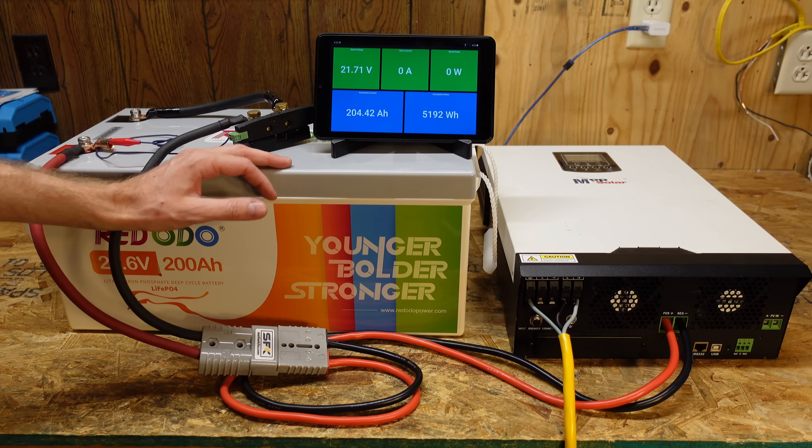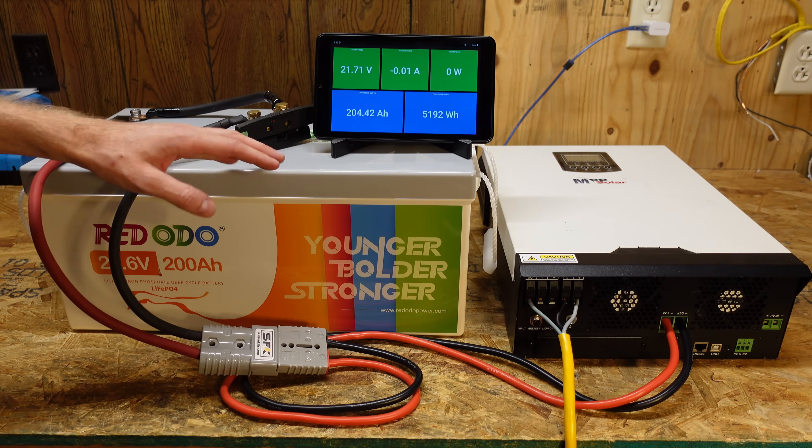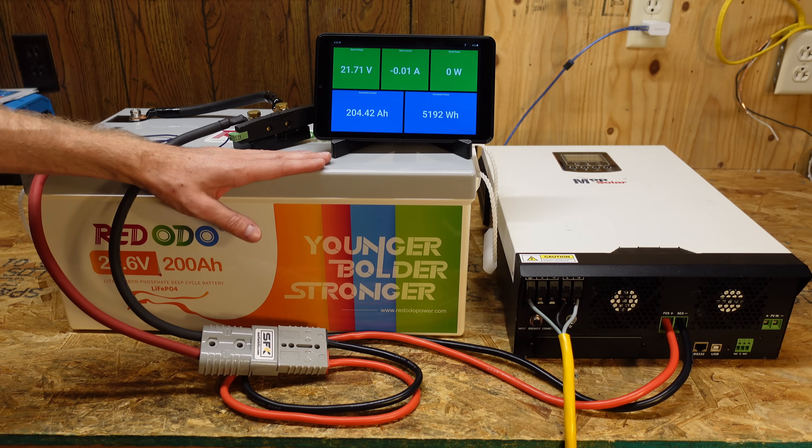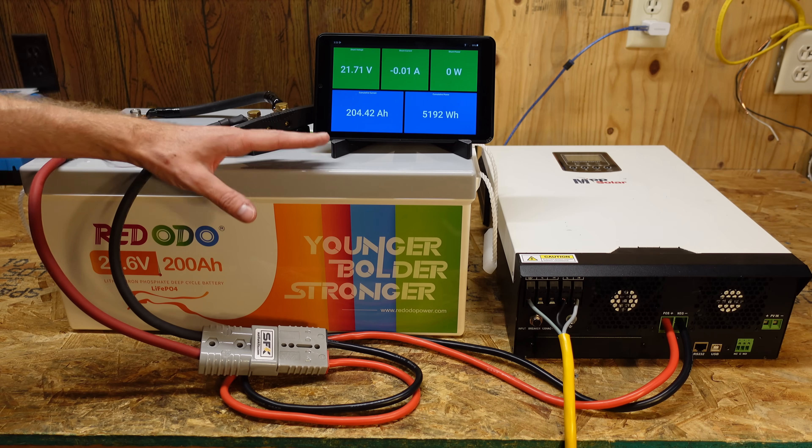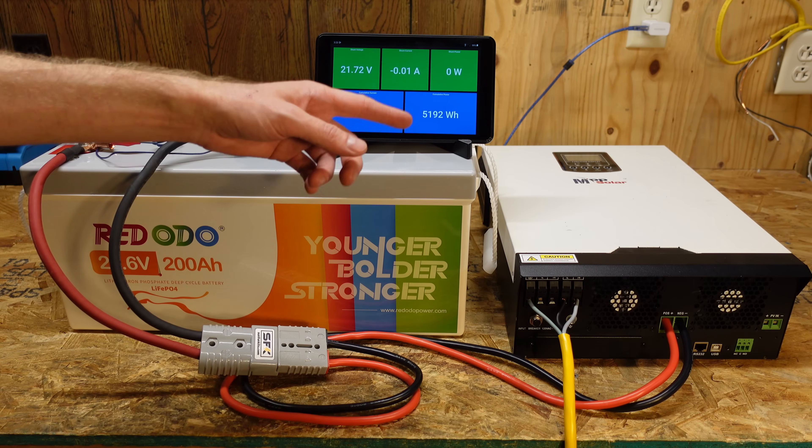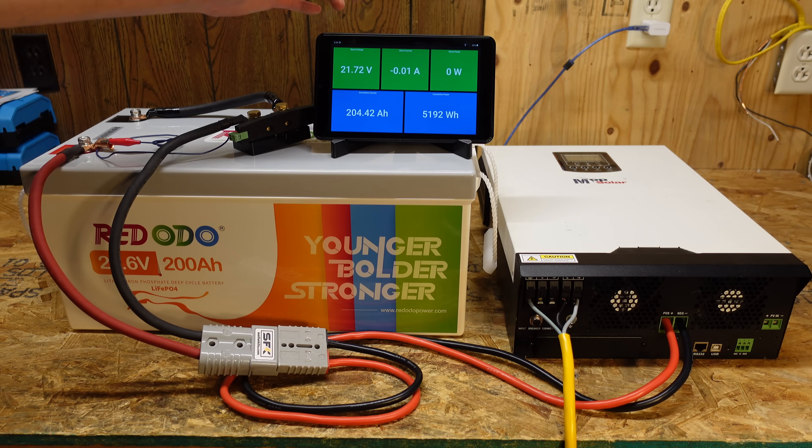All right, so our test has concluded. We came in at 204.4 amp hours. So that's almost 5 amp hours over its rated capacity. Additionally, I think the inverter shut down before the BMS in the battery. Unfortunately, we are still reading 21 volts here on the display.